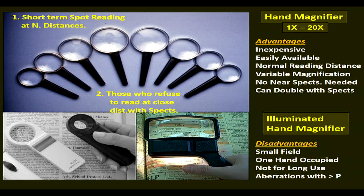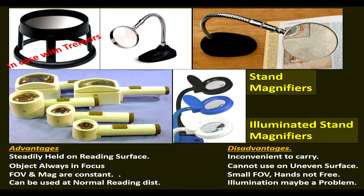Hand magnifiers with or without light are meant for short-term spot reading only. Advantages include flexible reading distance, range, and magnification. Disadvantages are that they are only good for short-duration reading, restricted visual field especially with higher power, and binocular vision is seldom obtained. Stand magnifiers — with or without illumination — are steadily held on the reading surface with the object always in focus. Their field of vision and magnification are constant, and they can be used at normal reading distance. Disadvantages include being inconvenient to carry, unable to use on uneven surfaces, small field of vision, hands not free, and possible illumination problems.